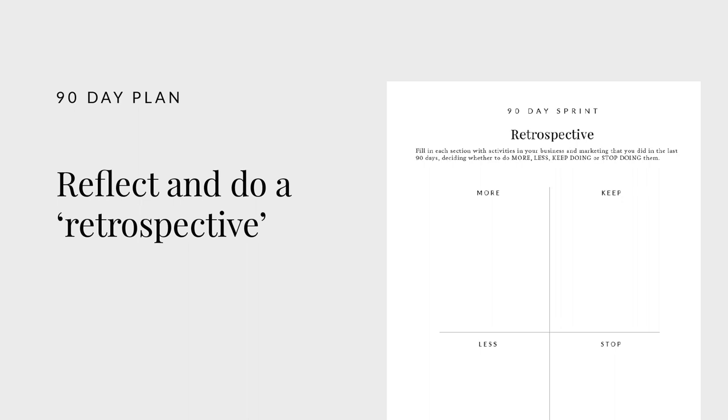Once 90 days have gone by, you want to do the reflection activities in the workbook again — write down what the goal was, note where on the scale of poor, okay, or excellent you ranked in terms of achieving it, and write down the activities and strategies that actually brought that result. Also do a retrospective: make a note of what you want to stop doing, what you want to do less of, what you want to keep doing, and what you want to do more of. You can split that into a grid, which is also in the workbook.